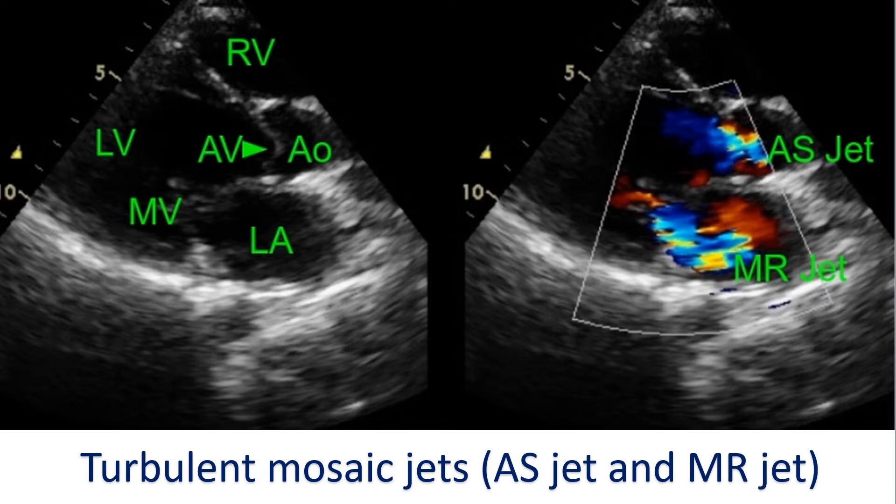When the blood flow velocity increases in abnormal situations, the flow becomes turbulent. A turbulent flow will be shown as a mosaic color, which is a mixture of the basic color of the flow with shades of yellow added to it. All high velocity flows across diseased valves will be shown as mosaic jets.